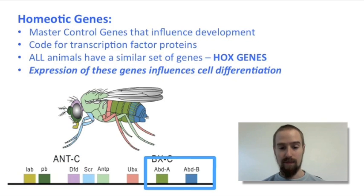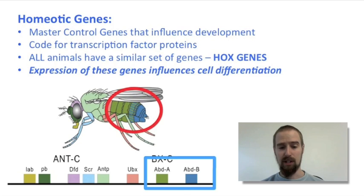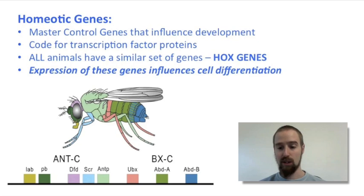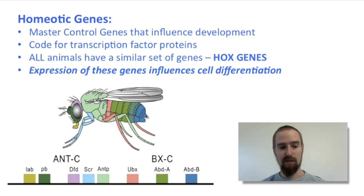Likewise, these two genes are expressed in the fruit fly's abdomen and are what caused this region to develop into the fly's abdomen and not its head. Mutations to these genes cause our fruit fly to develop abnormally, and experiments have been done that result in fruit flies growing legs where their antenna should be, or a head where their abdomen should be as a result of these kinds of mutations.